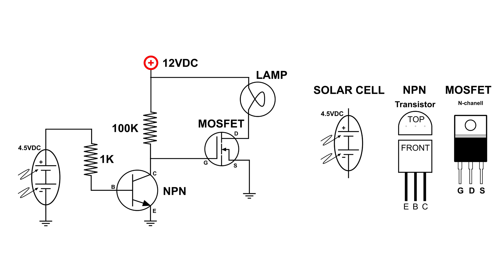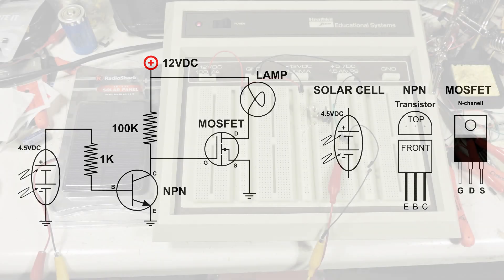Here's the circuit that I came up with. You can see we've got our solar panel in series with a 1,000-ohm resistor, and that goes to the base of the NPN transistor.